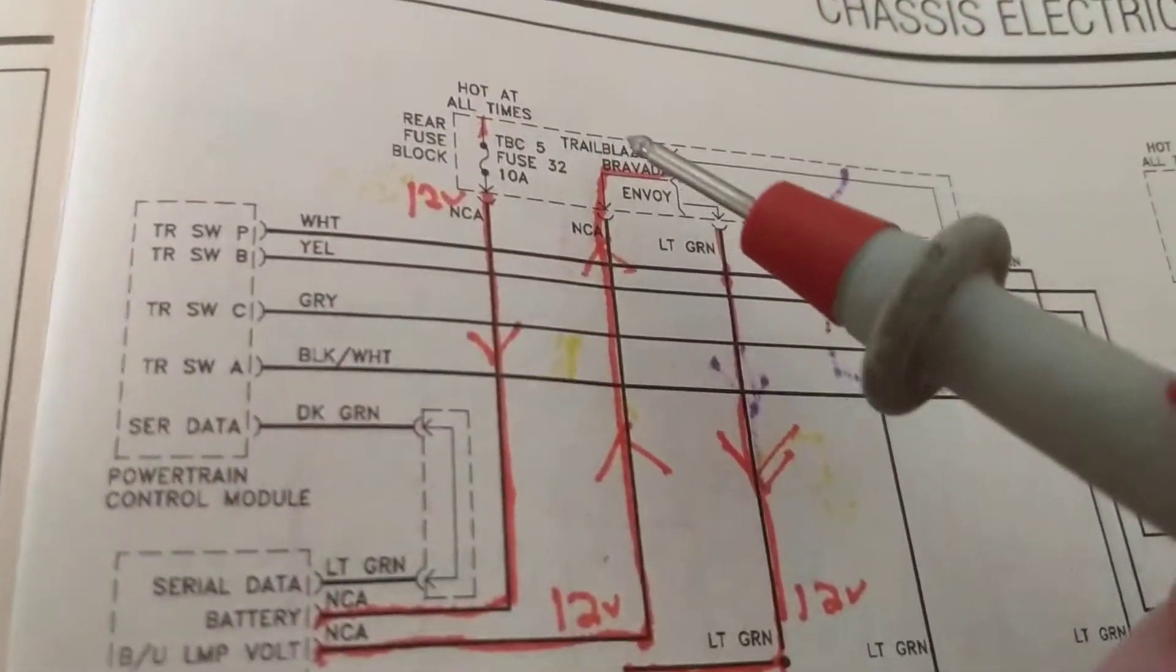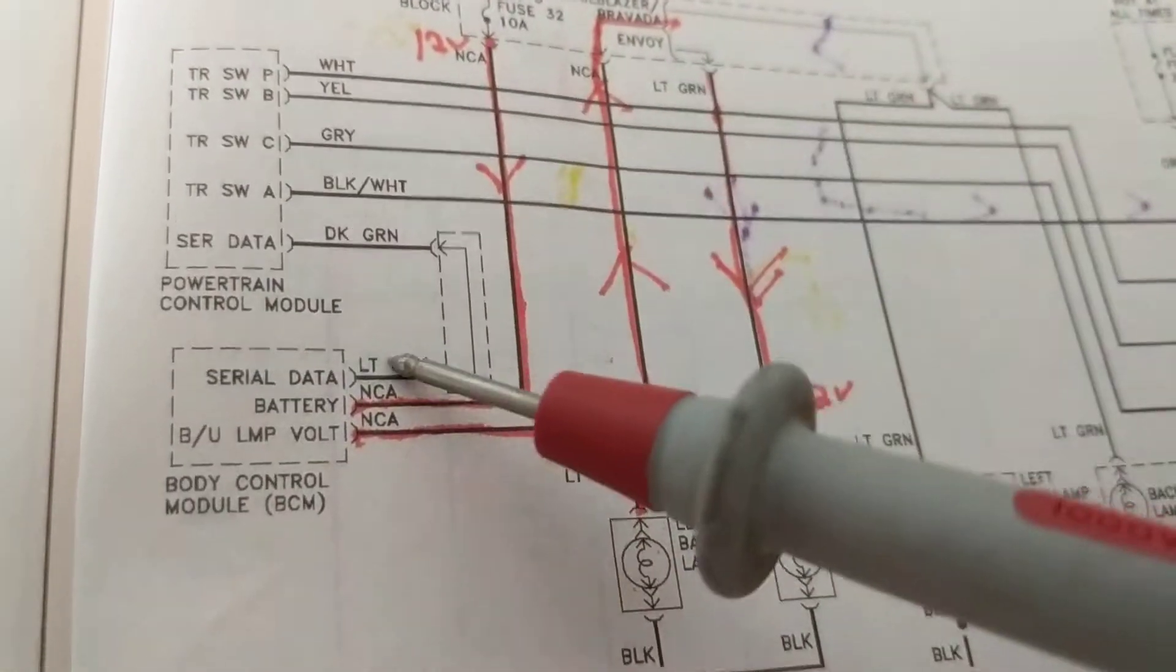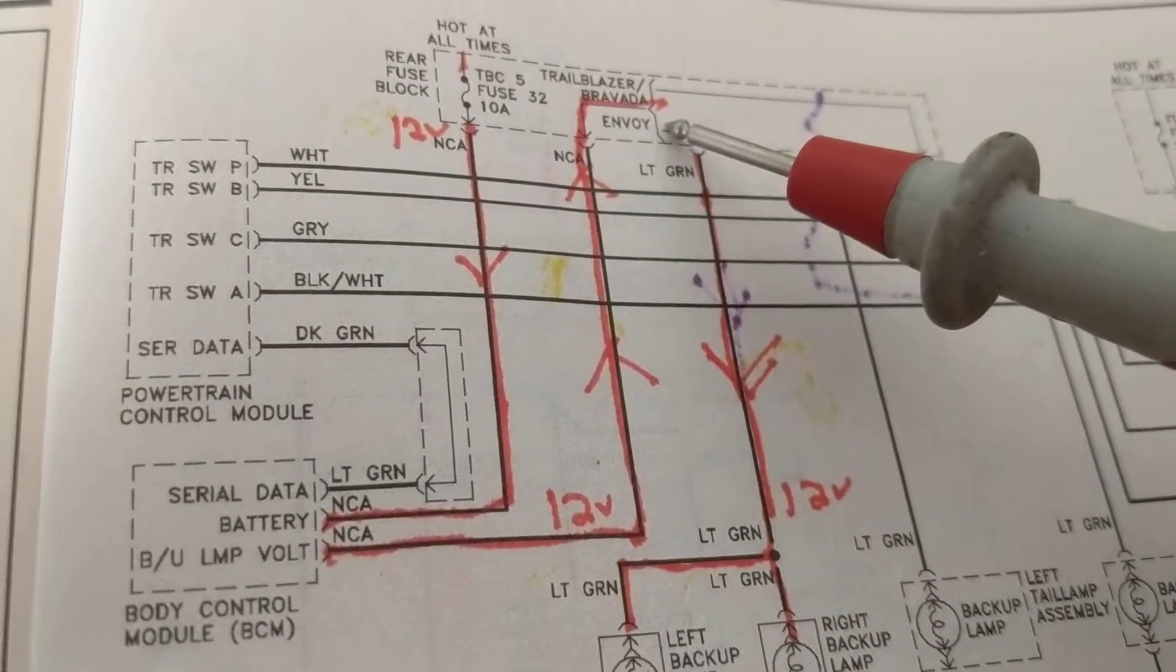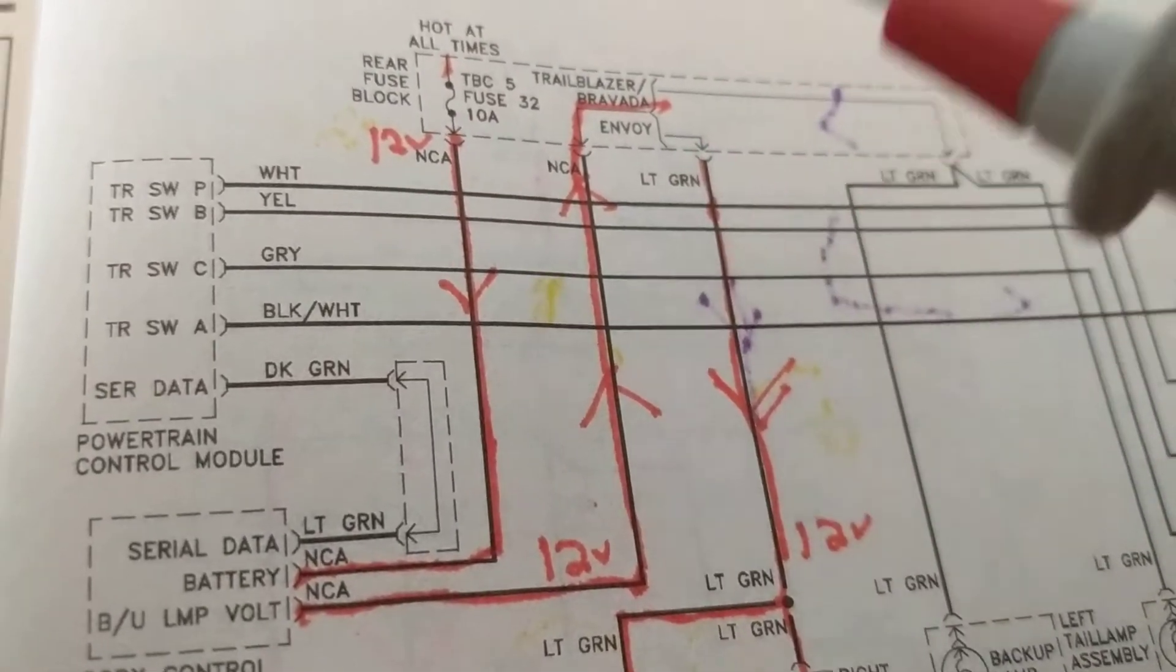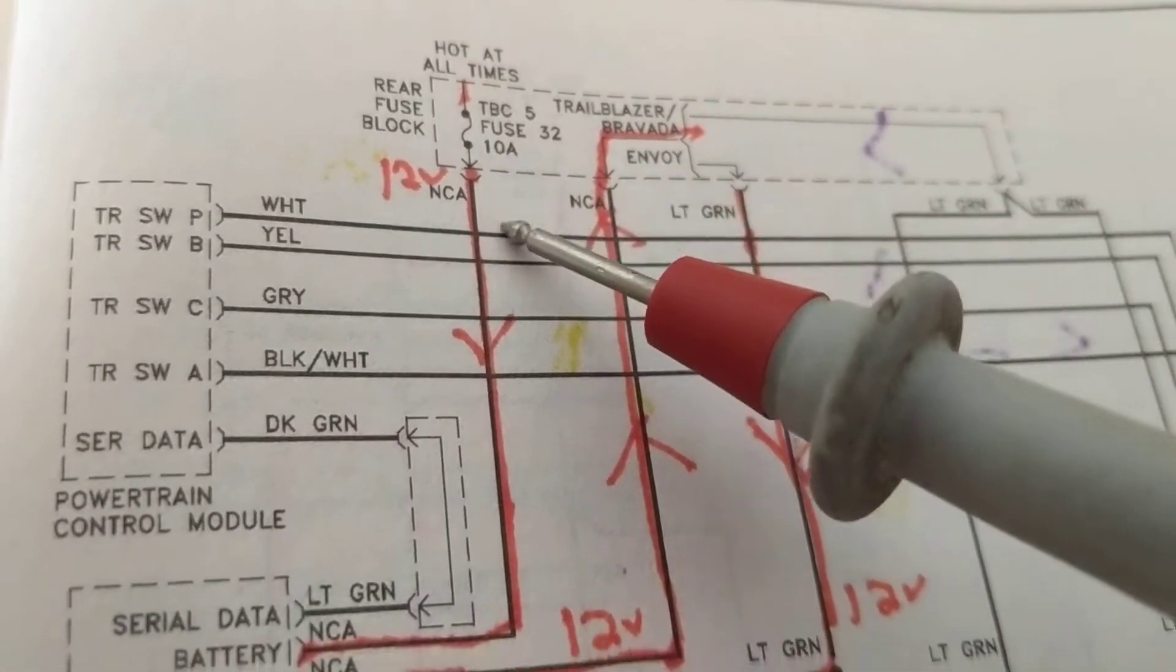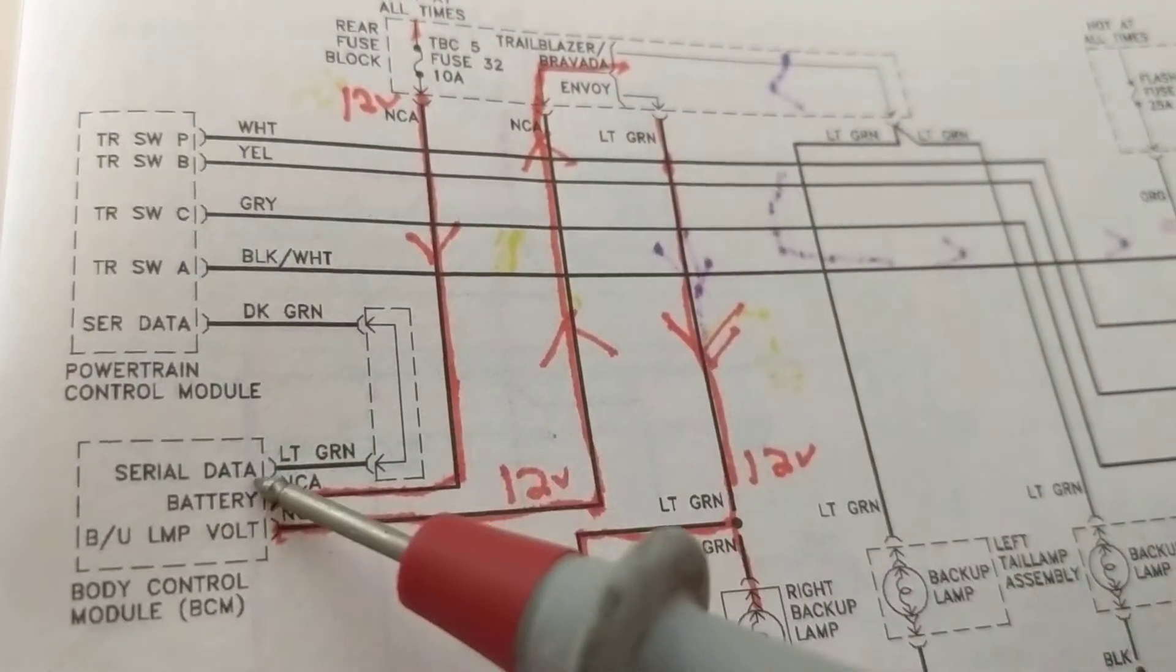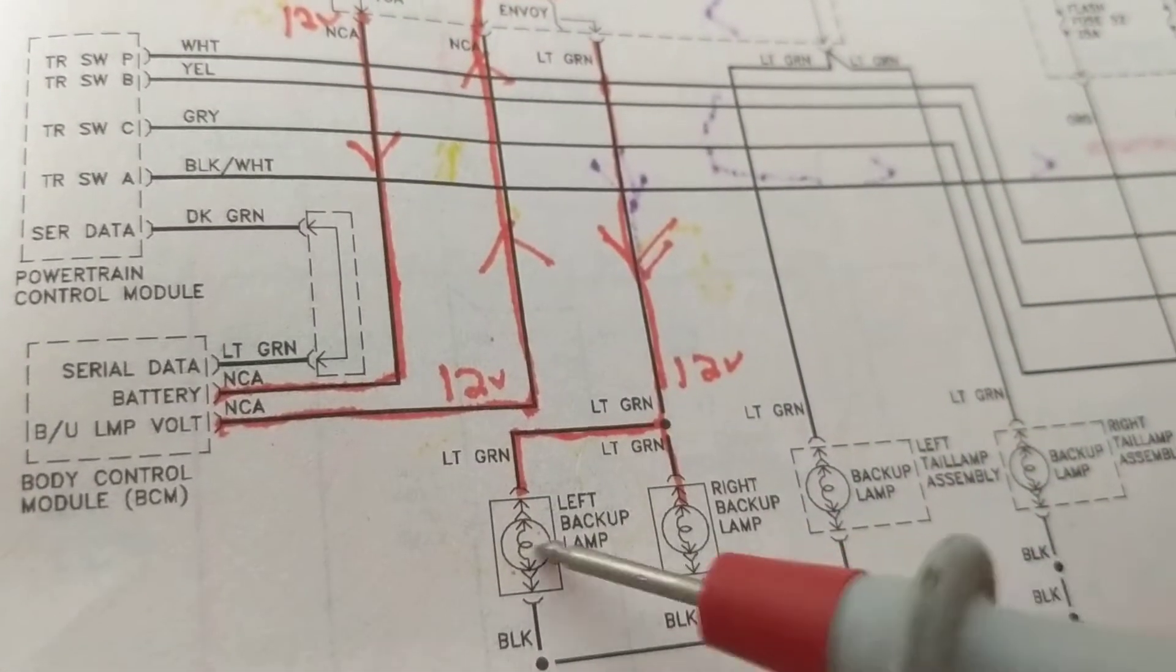Let's go to a simpler one. Look at this one. Left back up. Right back up. Reverse lights. Now we go again. Guess who's in charge again? BCM again. We need 12 volts here. How do we get 12 volts over here? If you look over here, trailblazer on one side, the trailblazer and bravada, and an envoy on this side. I'll explain in a second. Hot at all times, current flows through this fuse, 32, 10 amps, right through the battery. So this gets to 12 volts. Lamp voltage. It goes through here. This is the input. This is the output. 12 volts comes out here to the left and right lamps.